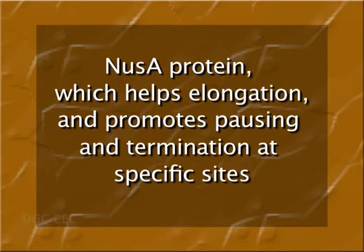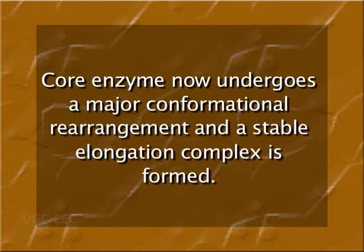A cycle of abortive initiation usually occurs, generating a series of short oligonucleotides before initiation is successful. Once initiation succeeds, the sigma factor of RNA polymerase dissociates. The dissociation of sigma factor marks the entry of NUS-A protein, which helps elongation and promotes pausing and termination at specific sites. The core enzyme now undergoes a major conformational change and a stable elongation complex is formed, which moves along DNA synthesizing RNA at a rate of about 40 bases per second at 37°C.